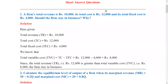In this problem, the total revenue is Rs. 10,000, total cost is Rs. 12,000, and total fixed cost is Rs. 4,000. So we have to measure total variable cost. Total cost equals TFC plus TVC, so TVC equals TC minus TFC, which is 12,000 minus 4,000. Therefore, the total variable cost is Rs. 8,000.